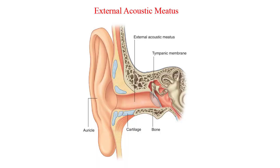The external auditory meatus, or the external acoustic meatus, is approximately 7 mm in diameter and 2.5 cm long when measured from the depth of the concha, but you would add another 1.5 cm to its length if you choose to measure it from the tragus. The external auditory meatus and concha are resonating cavities that both contribute to hearing and are a major determinant of the resonant frequency.